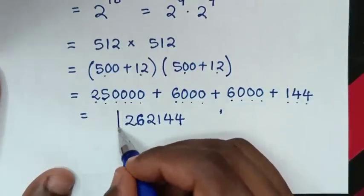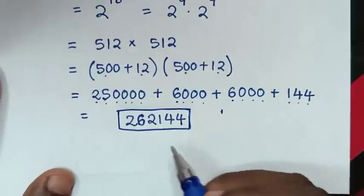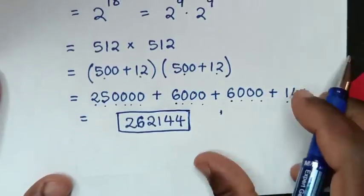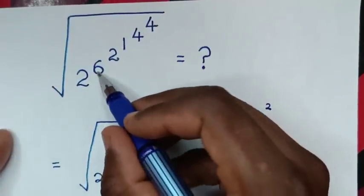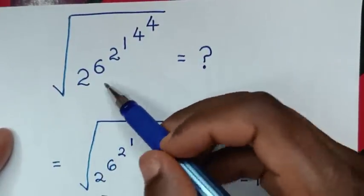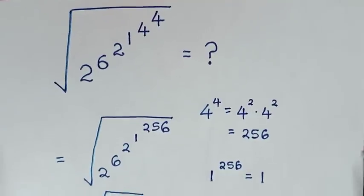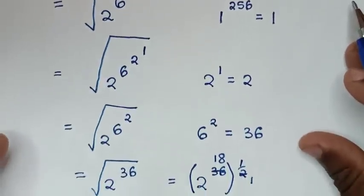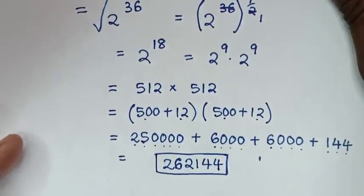So our final answer is 262,144. From our original problem — square root of 2 power of 6 power of 2 power of 1 power of 4 power of 4 — the answer is 262,144. Hope our answer brings a smile to your face. Thank you for watching. Don't forget to subscribe to my channel, and see you in the next video. Bye bye!